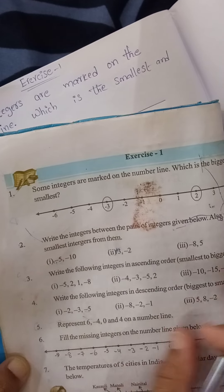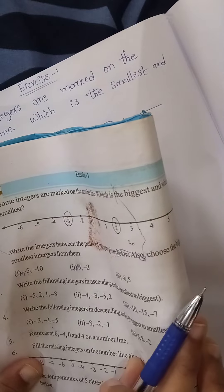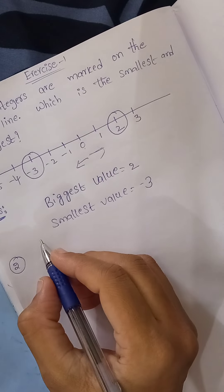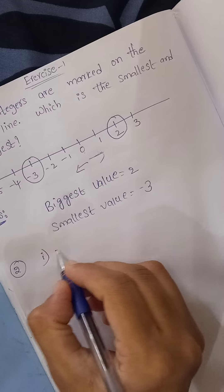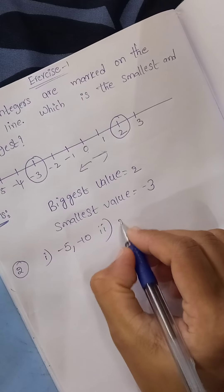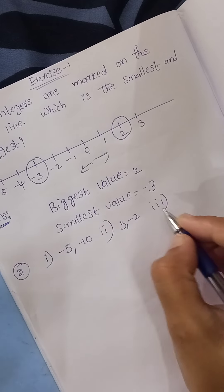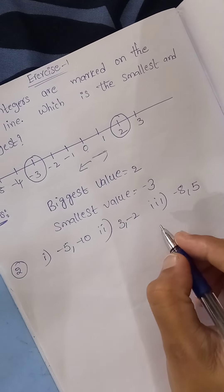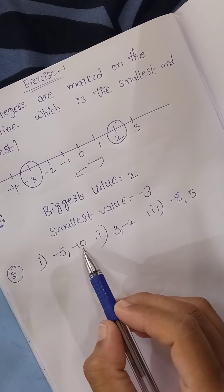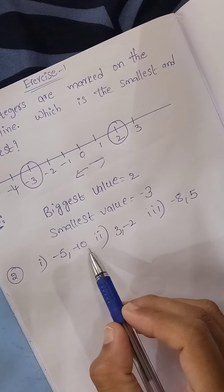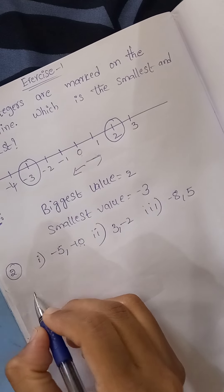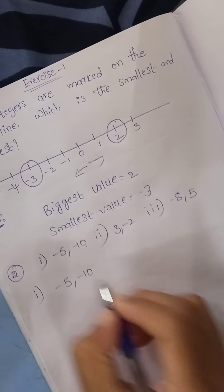The next question says: write the integers between the pairs of integers given below, and also choose the smallest and biggest integer from them. We have three pairs: minus 5 and minus 10, then 3 and minus 2, and then minus 8 and 5. First we write the integers between the two given integers, then we choose the biggest and smallest value.